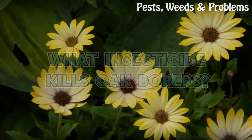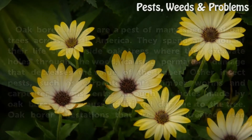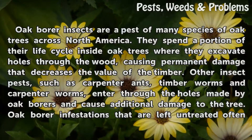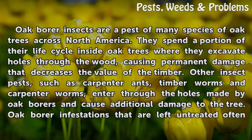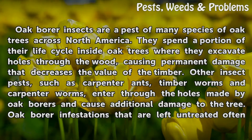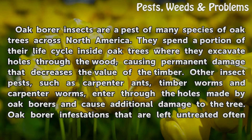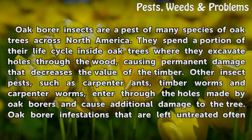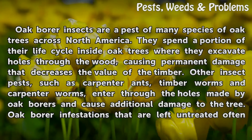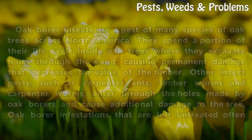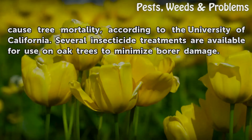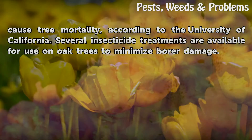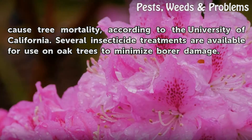What Insecticide Kills Oak Borers. Oak borer insects are a pest of many species of oak trees across North America. They spend a portion of their life cycle inside oak trees where they excavate holes through the wood, causing permanent damage that decreases the value of the timber. Other insect pests, such as carpenter ants, timber worms and carpenter worms, enter through the holes made by oak borers and cause additional damage to the tree. Oak borer infestations that are left untreated often cause tree mortality, according to the University of California. Several insecticide treatments are available for use on oak trees to minimize borer damage.